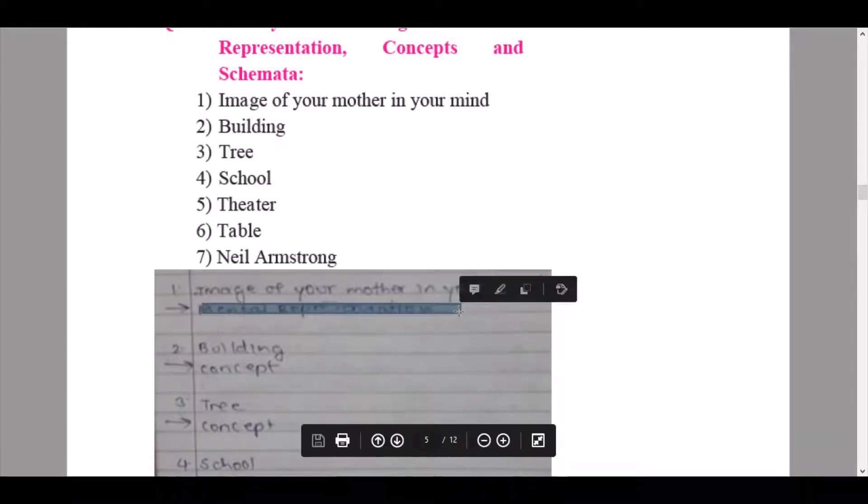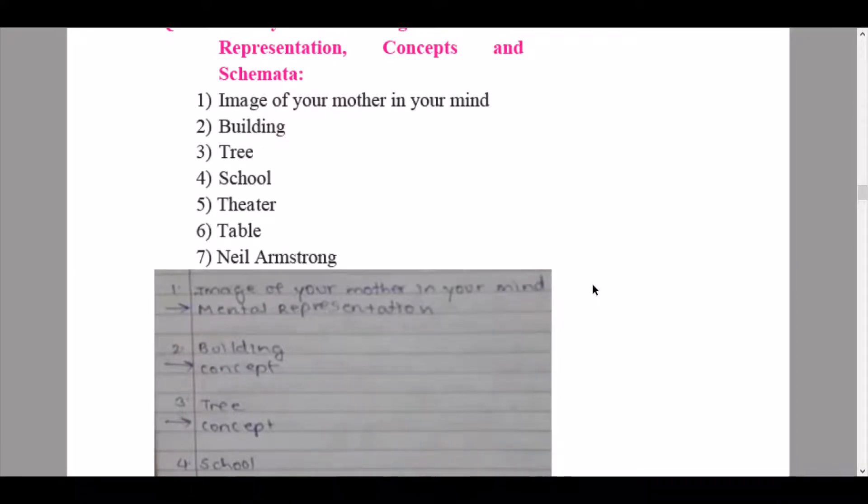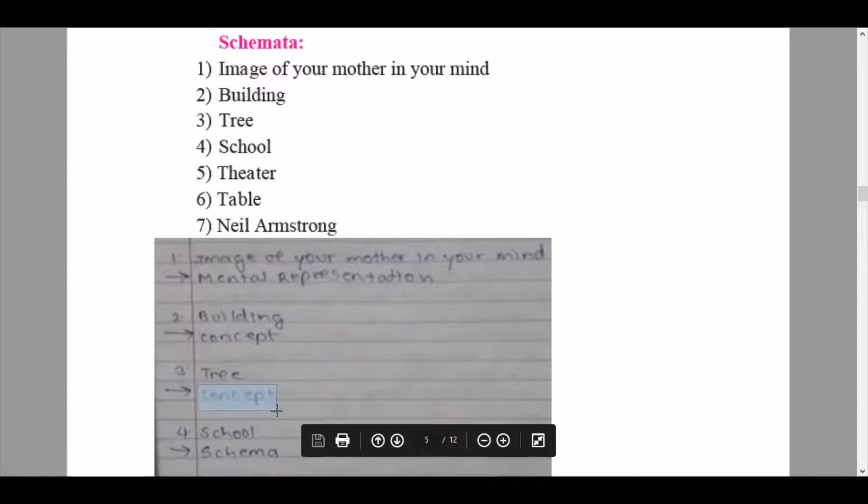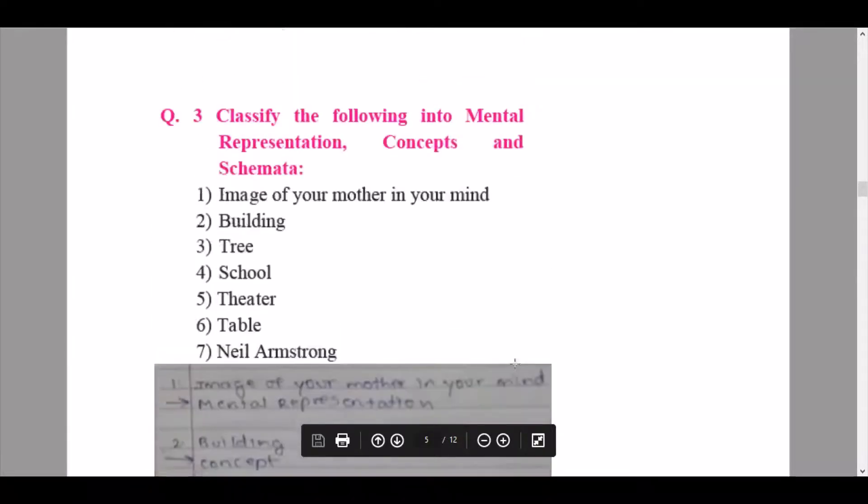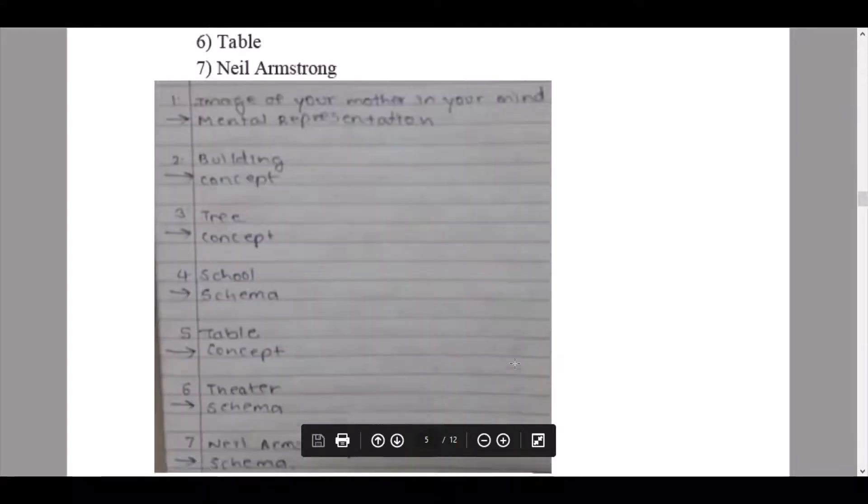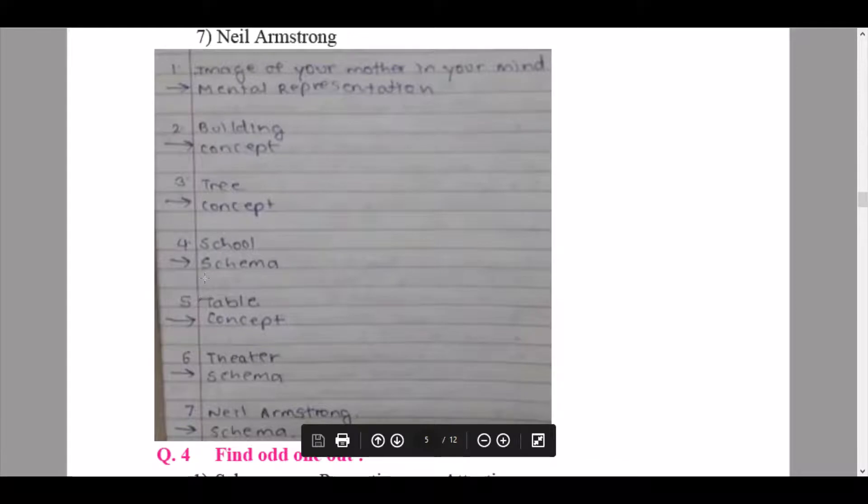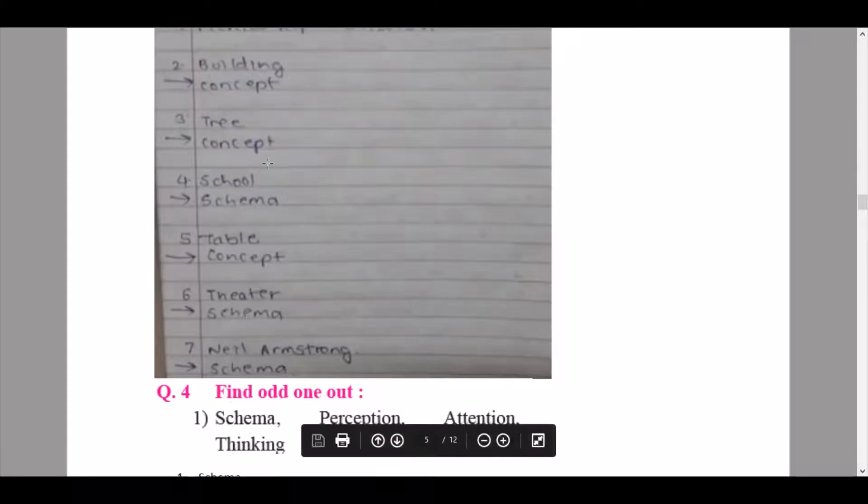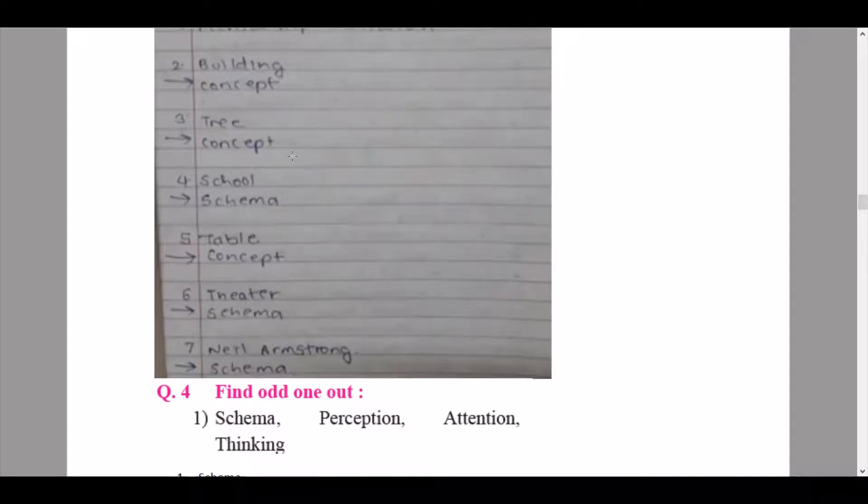So this is the mental representation as you have already seen your mother, so you have an image built up. Then we have the second question: building. So this will come to you as a concept. The next one is tree, this again is a concept. The next one is school, this will come to you as a schemata. Next we have table, this is a concept of thinking. Then we have theater, that is schema again. Neil Armstrong, schema. So these were your answers. Please take a screenshot. I'll be uploading this PDF on the Patreon page.